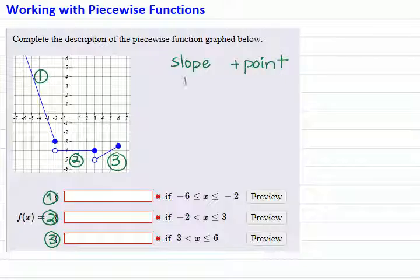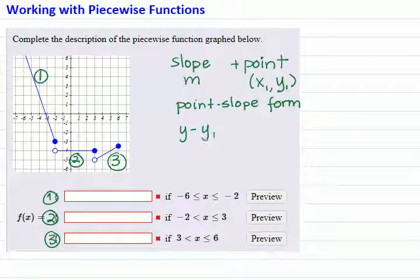If the slope is m and the point is x₁, y₁, then we can find the equation of the line using the point-slope form. The point-slope form says the equation of the line with slope m passing through the point x₁, y₁ is y minus y₁ equals m times x minus x₁.